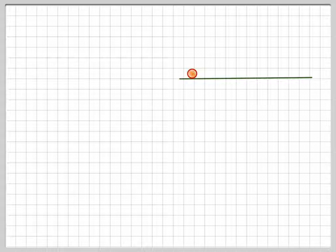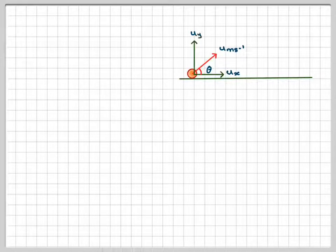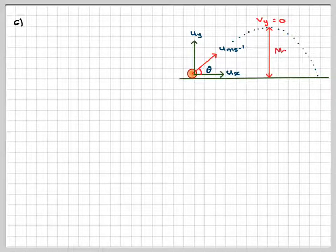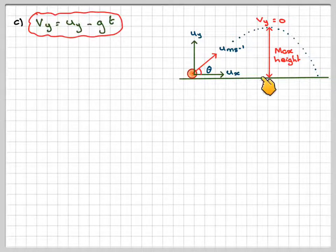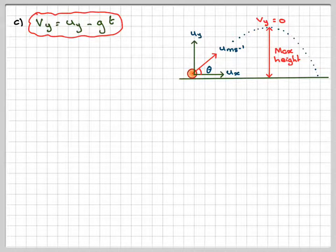In order to calculate the maximum height, the maximum height will happen when the velocity in this direction is equal to zero. We could use the symmetrical properties, but I will show you that it happens when t is two, because this total distance is when t is equal to four.